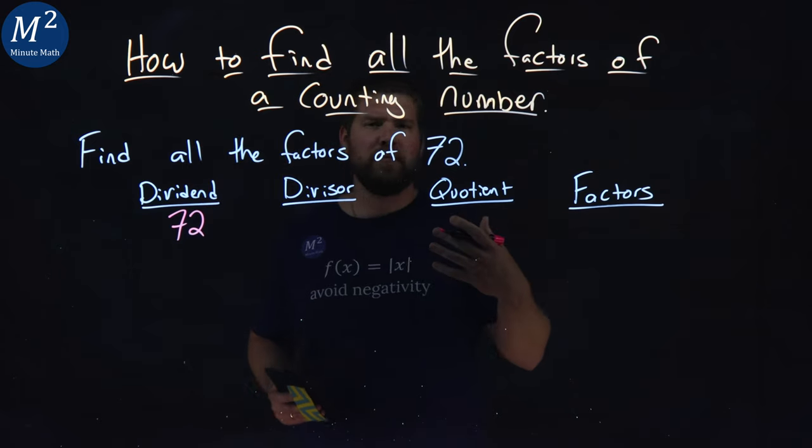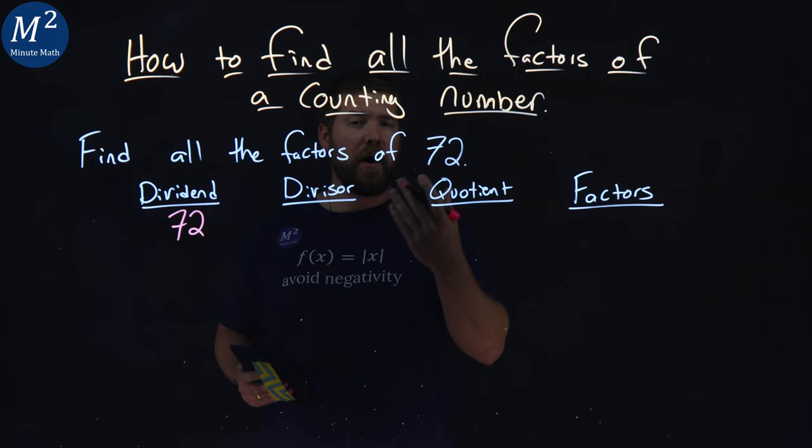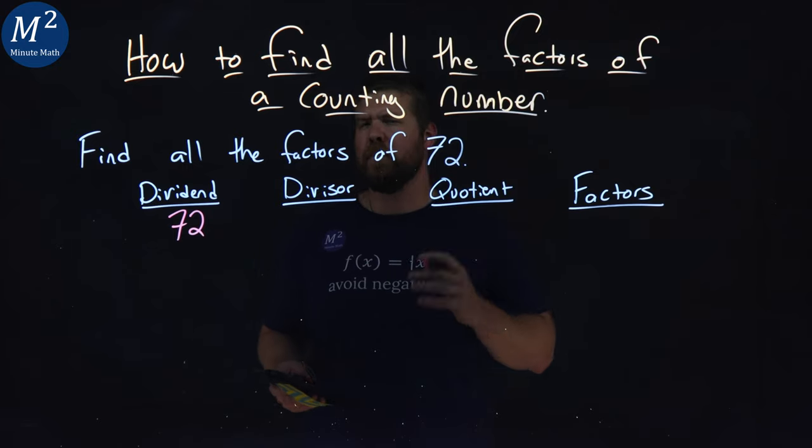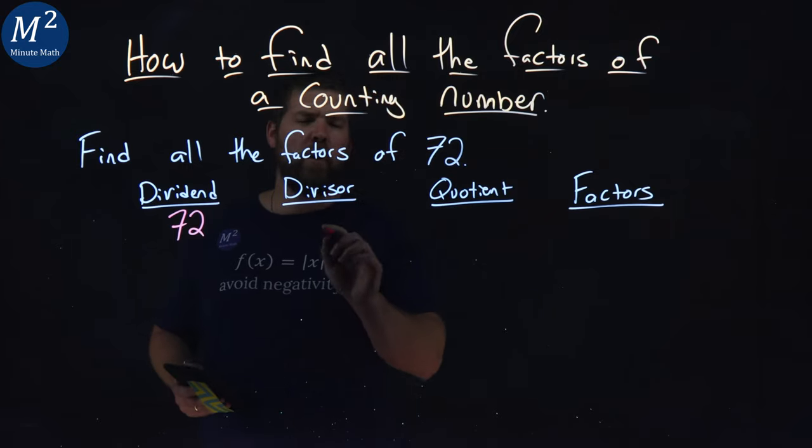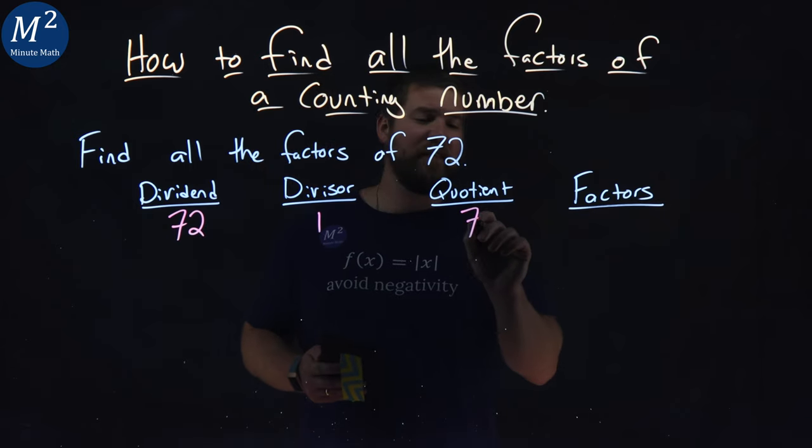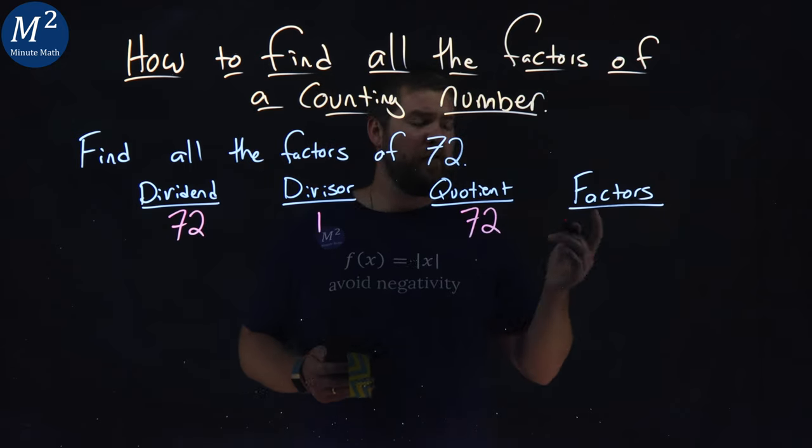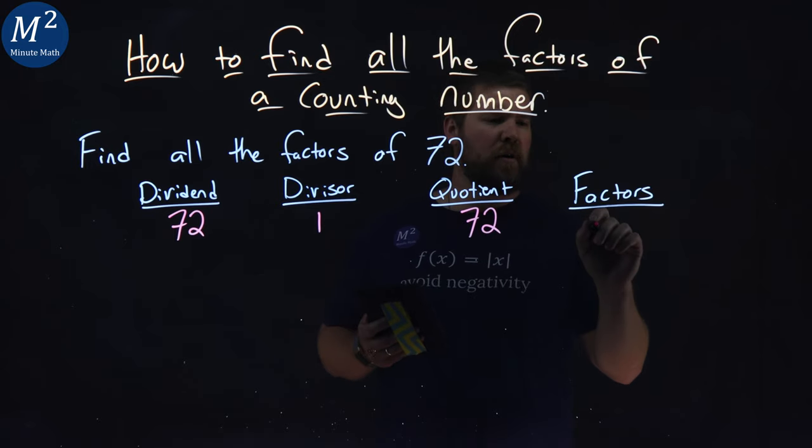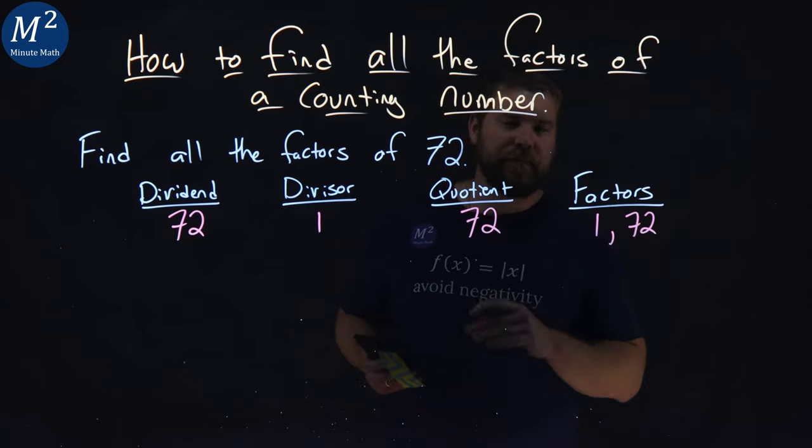We're going to start counting through divisors, possible divisors, until we get to a certain point. So we'll start with 1 as a divisor. 72 divided by 1 is 72. That tells me the factors of 72 are 1 and 72. Easy peasy.